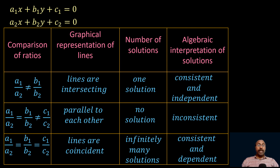If a1/a2 is equal to b1/b2 but not equal to c1/c2, then the lines are parallel to each other. In this case, there is no common point for the lines.